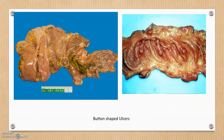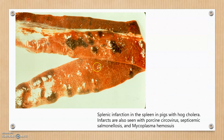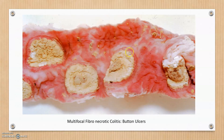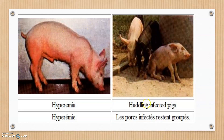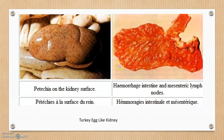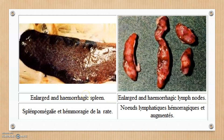The lungs show congestion and hemorrhage. Button ulcers can be seen in the cecum and colon of the large intestine — these are fibro-necrotic purulent sites. Splenic infarcts are present in the spleen; note that salmonellosis and porcine circovirus can also produce splenic infarcts. Images show multifocal fibro-necrotic colitis, hyperemia, huddling infected pigs, petechiae and cyanosis of the extremities, and the kidney with a turkey egg appearance due to petechial hemorrhages on the surface. Button ulcers appear as small circle-shaped ulcers. The enlarged spleen shows multiple infarcts.